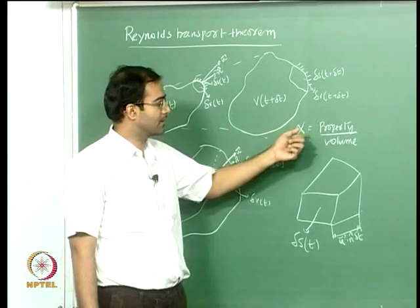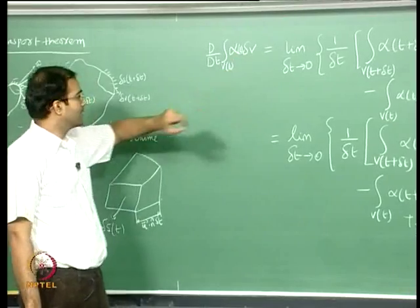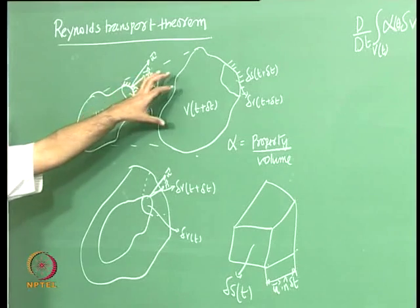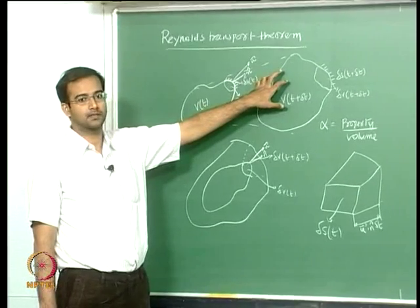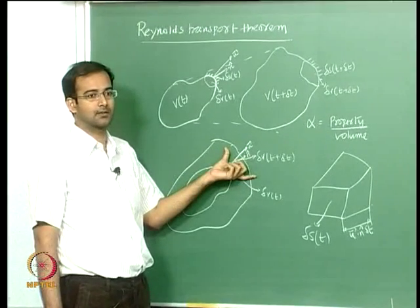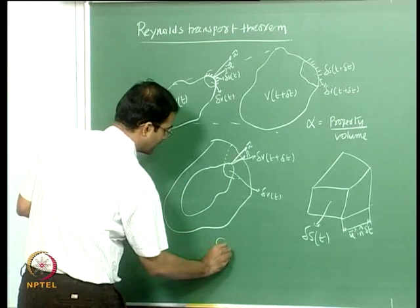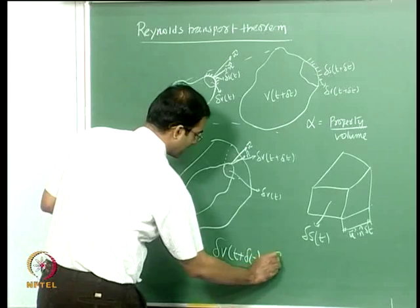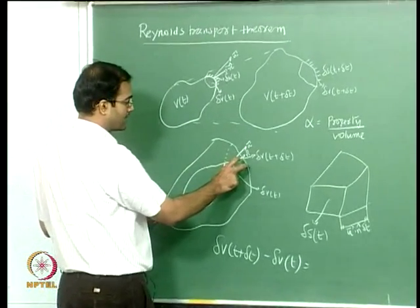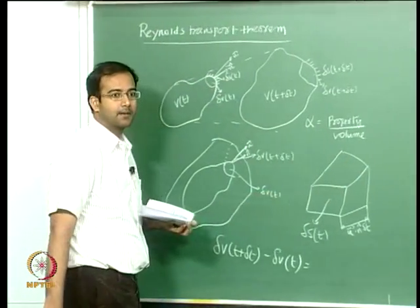The Lagrangian frame of reference can be used to calculate the rate of change of a particular property with respect to time. We take a small differential volume delta V at time T and see how it evolves. The same differential volume at time T plus delta T — if we overlap the two control volumes, we see delta V has grown. We can calculate the change delta V at T plus delta T minus delta V at T from the velocity vector.